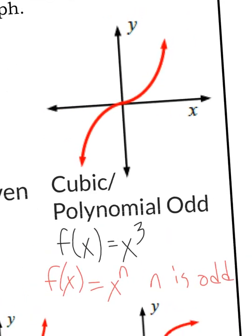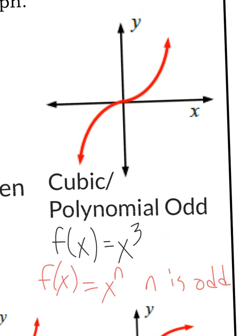The next one is cubic. Most of the time we see cubic functions, but if I change the power to any other odd power, it'll still essentially have this same zigzag shape. Cubic is just x to the 3rd. Any function where x to the 3rd is the highest power is going to make a cubic graph. And if it's other than 3 — like 5, 7, 9, 11 — that'll be called a polynomial odd graph.